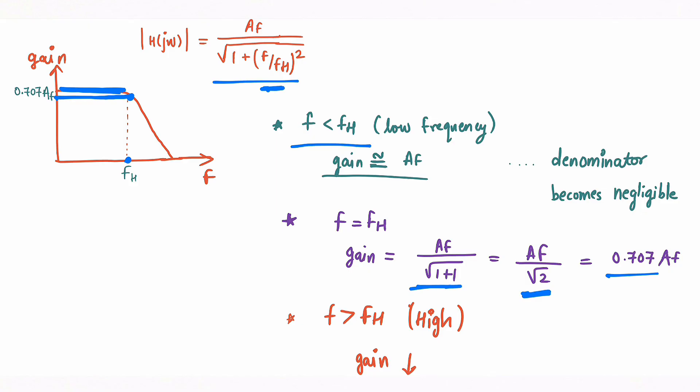Now the third scenario is you increase your frequency and now your frequency is greater than fH, means it is higher frequency. Now you are increasing your frequency so the denominator of your equation increases and the gain decreases. So you can see in stopband your gain is decreasing.